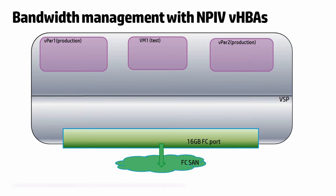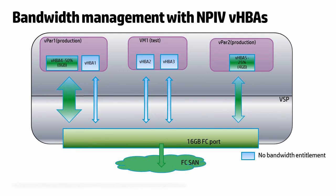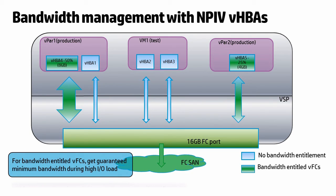Bandwidth management with NPIV HPAs. With the NPIV feature of FC technology, one can create multiple virtual FC ports backed by a single physical FC port and assign these virtual HPA instances across vPARs and VMs. Prior to version 6.3 of the product, there was no way to associate a certain minimum guaranteed bandwidth with any of these virtual instances. Now, with version 6.3.5, each of these NPIV HPAs can have a certain bandwidth percentage associated with them, and the specified percentage of the physical FC port's bandwidth is guaranteed to be available for the NPIV HPA during high load scenarios.